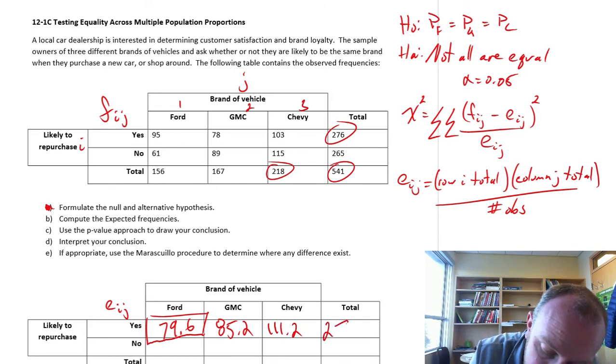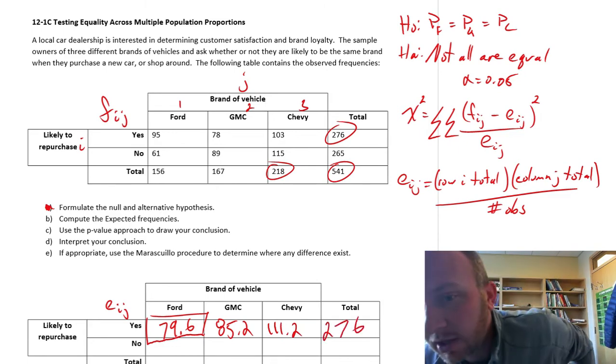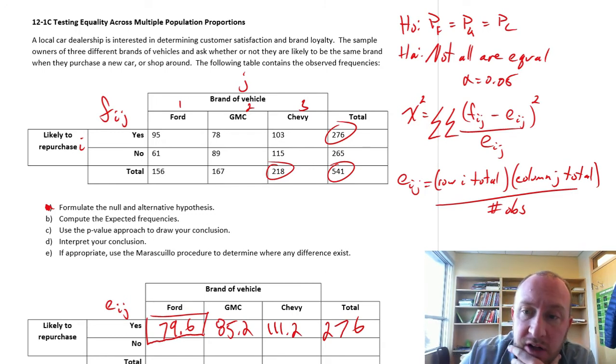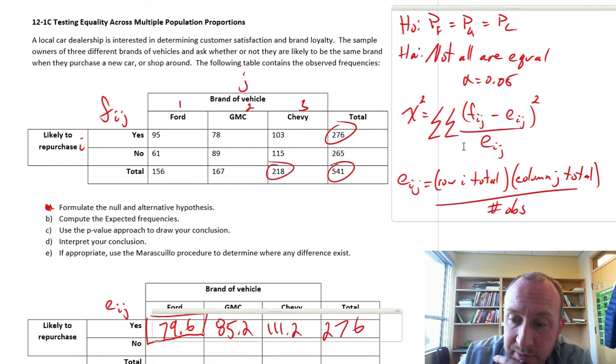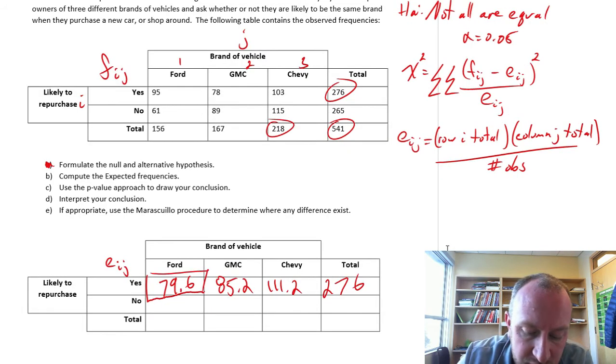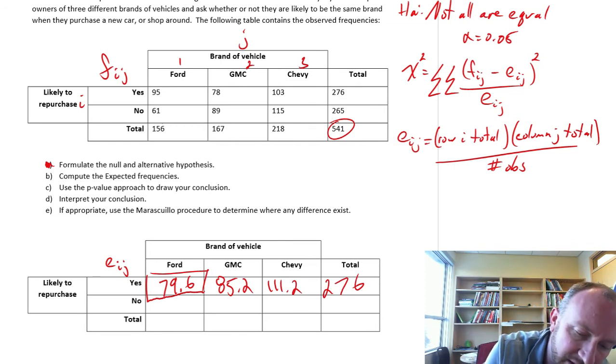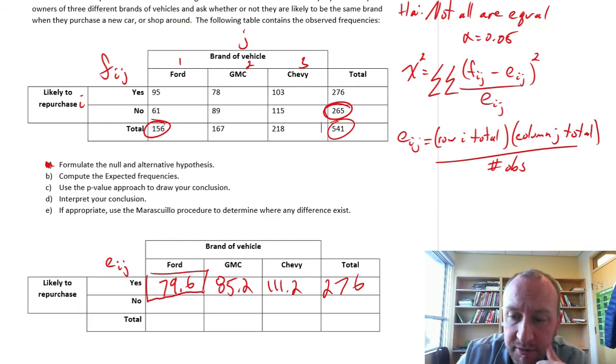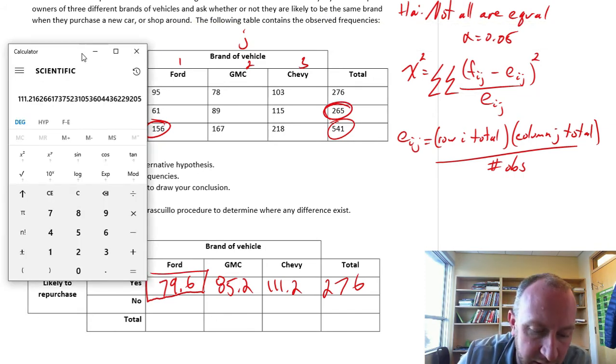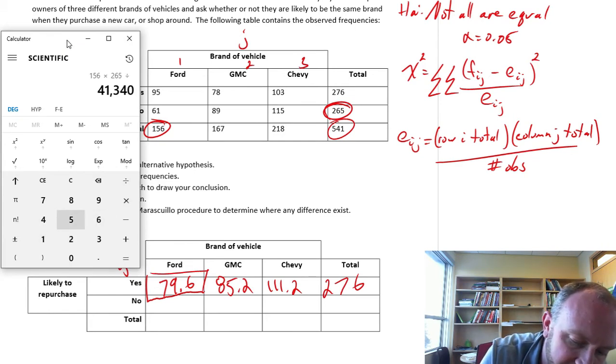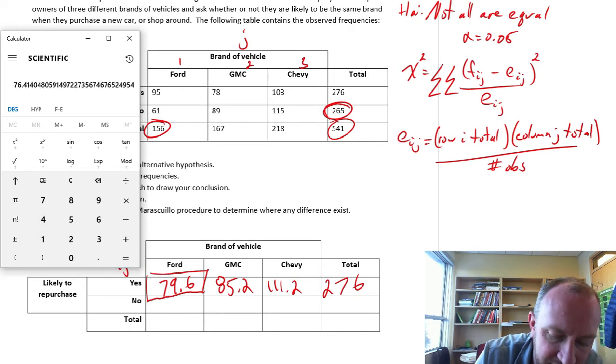And those totals should all be exactly the same. It's a good way to check your algebra just to make sure you haven't made any mistake. All of those row and column totals should always add up to be the same amount. So if we do it now for the no responses, I guess I am going to go through all of these. Now we need to go back to the Ford column total, and now that row total is for the no responses. So the next one here will be 156 times 265 divided by 541, which is 76.4.